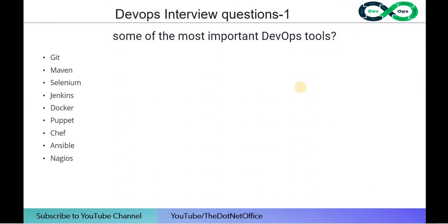Some of the most important DevOps tools discussed in tutorials include: Git, Maven, Selenium, Jenkins, Docker, Puppet, Chef, and Ansible. Different tools are used for different steps — for example, Git is used for version control and Puppet is used for monitoring and configuration management.